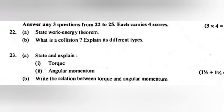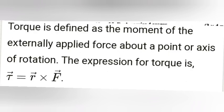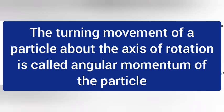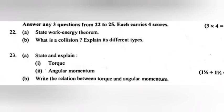Question 23A: State and explain: 1. Torque 2. Angular momentum. Answer: Torque is defined as the moment of externally applied force about a point or axis of rotation. Torque is equal to R into F. 2. The turning moment of a particle about the axis of rotation is called angular momentum of the particle.